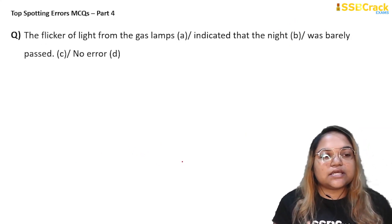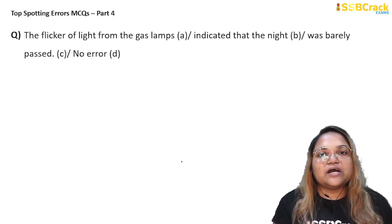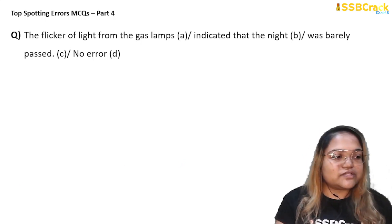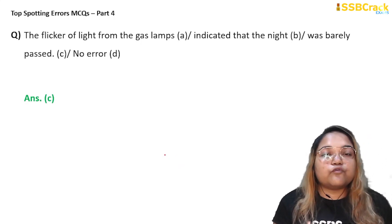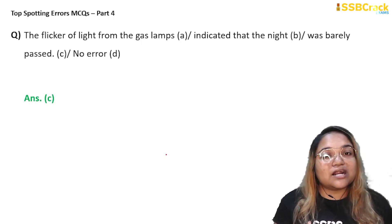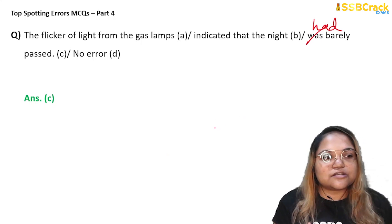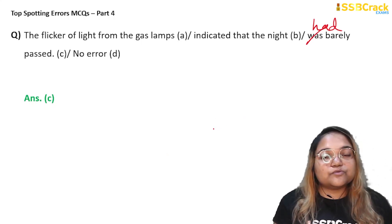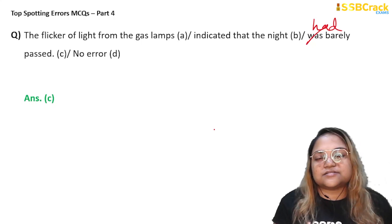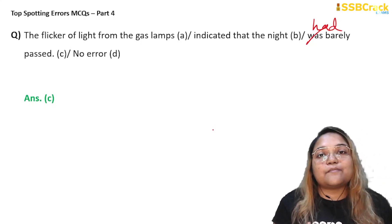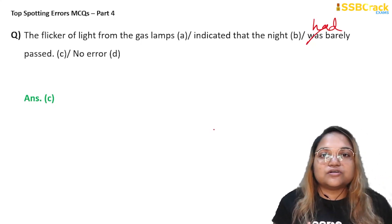Next question: 'The flicker of light from the gas lamps indicated that the night was barely passed.' The sentence seems correct but has an error in part C. We should not say 'was barely passed' when referring to time passing. When time has elapsed, we use 'has past' — or in a past context, 'had barely passed.' 'Was passed' implies someone passed a test or exam, not that time elapsed. For time, the correct form is 'had barely passed.' Answer: option C.